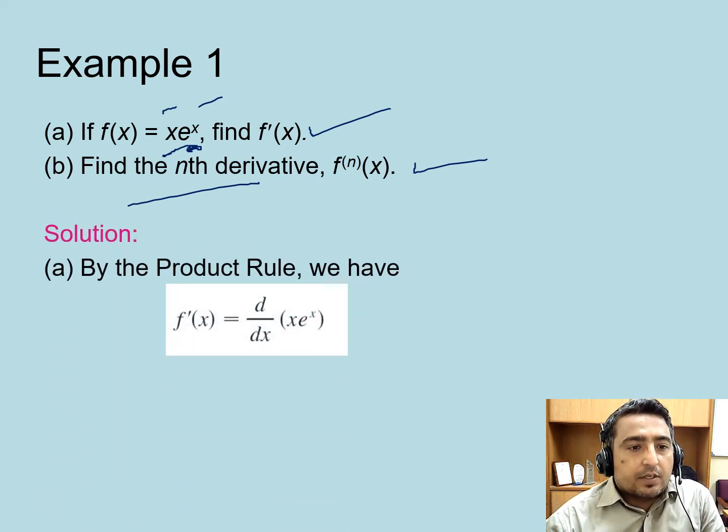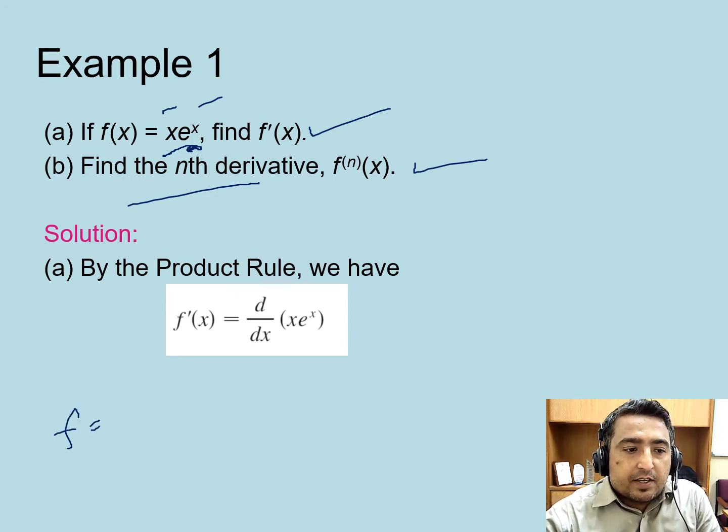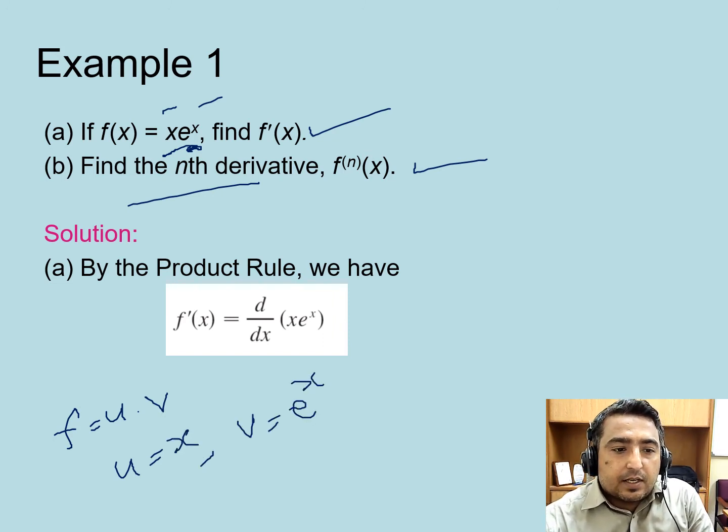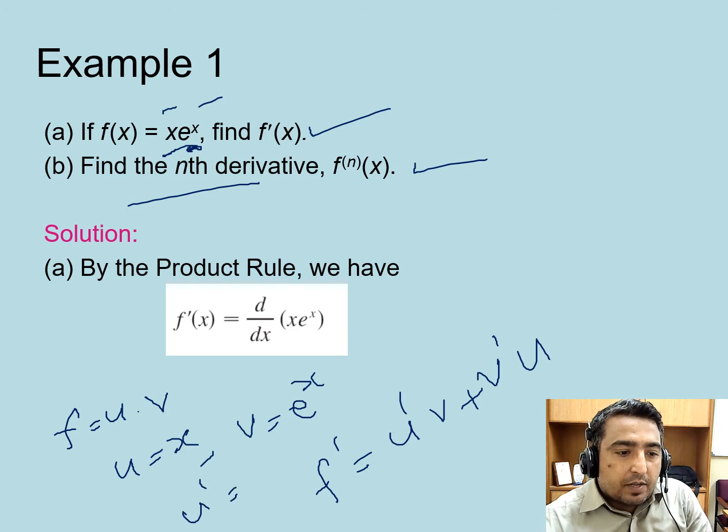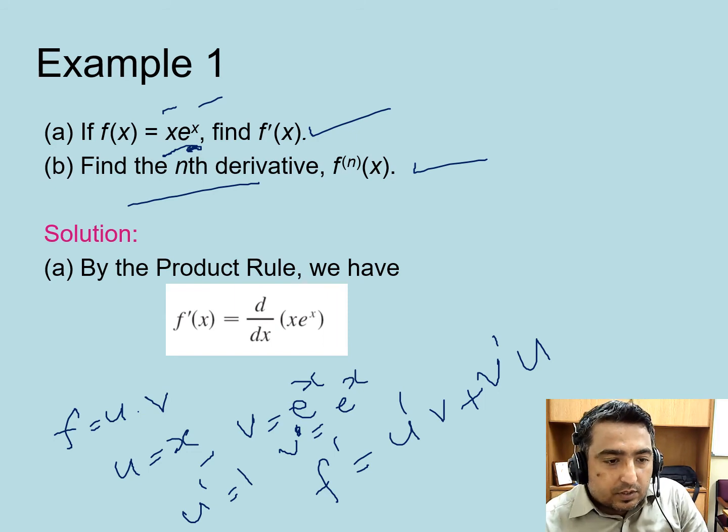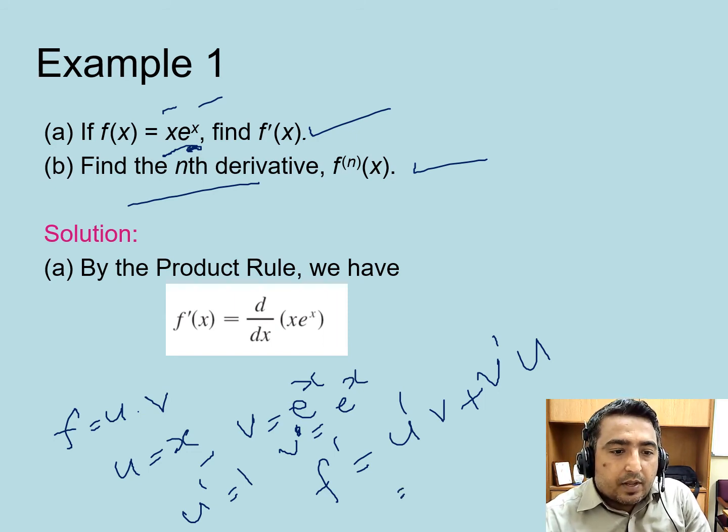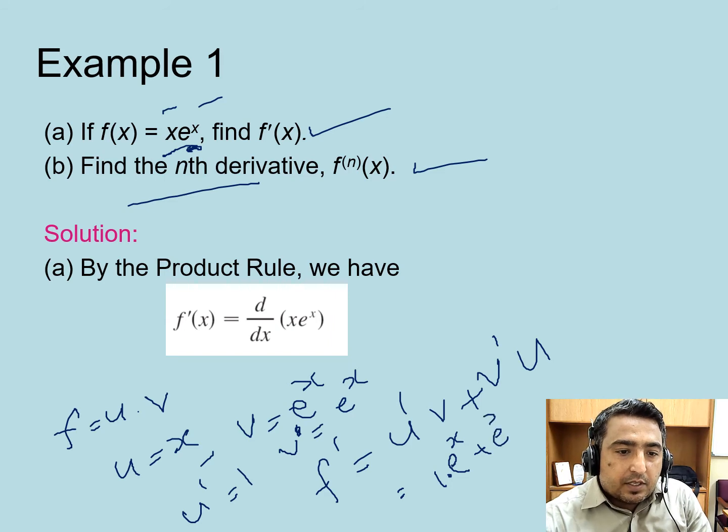The first derivative using the product rule: f = u·v where u = x and v = e^x. Then f' = u'v + v'u, where u' = 1 and v' = e^x. Using these four values in the formula, we get f' = 1·e^x + e^x·u.